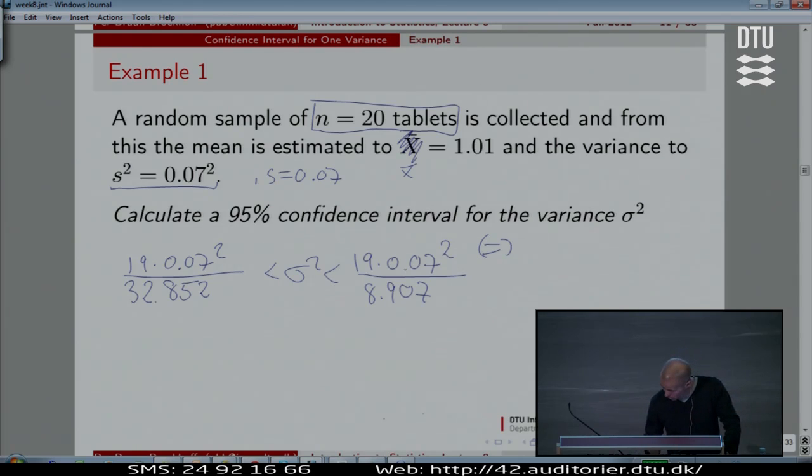We can put it into our pocket calculator or use R. I did that already, so let me just give the result here. I get 0.002834 less than sigma-squared less than 0.01045. Now, what about... So basically this was the result.